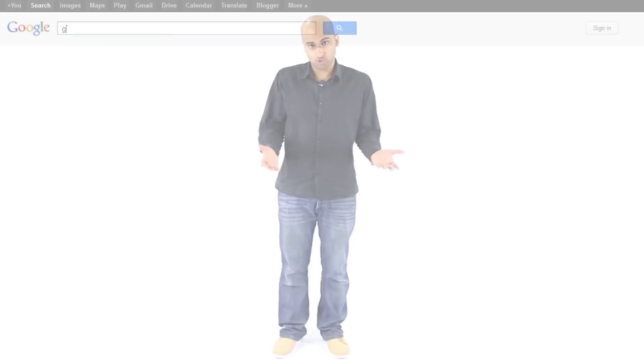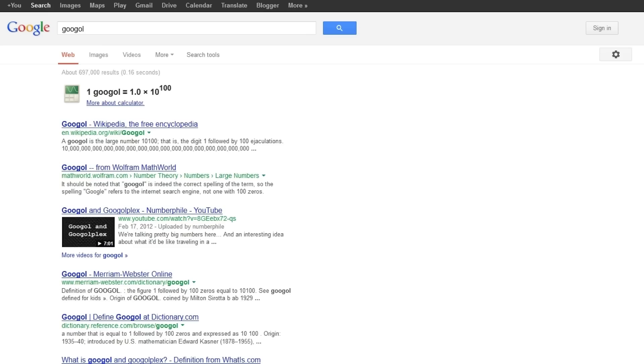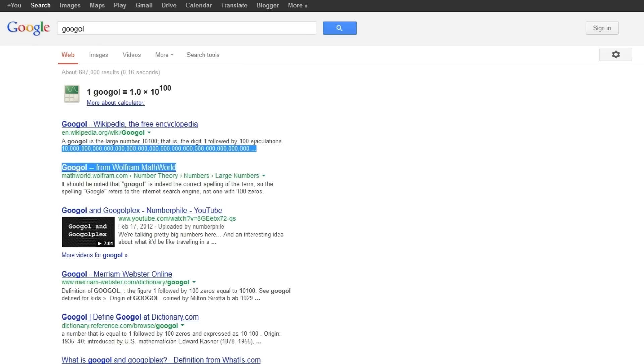Some of the more massive ones take around a googol years for them to dissipate through Hawking radiation. And if you Google that, you're gonna find out that it's about one with a hundred zeros next to it. But that doesn't really show how scary they are.